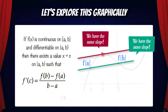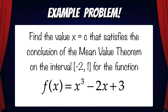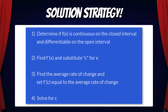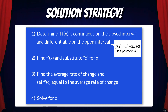Let's do an example problem. Find the value x equals c that satisfies the conclusion of the mean value theorem on the interval negative 2, 1 for the function f(x) equals x cubed minus 2x plus 3. Before we try and solve this, let's outline a solution strategy. The first thing we need to do is determine if f(x) is continuous on the closed interval and differentiable on the open interval. Here f(x) is a polynomial, and polynomials are smooth and continuous functions, so this function satisfies those requirements.